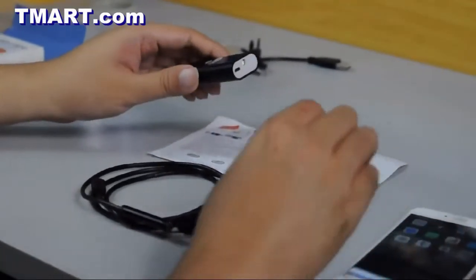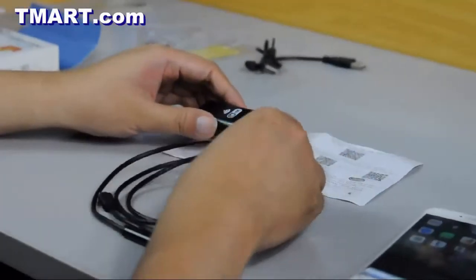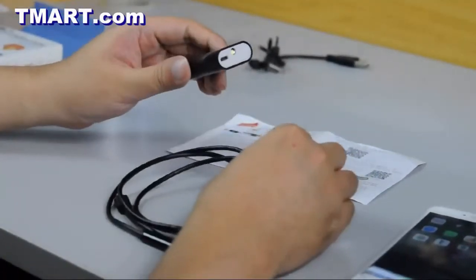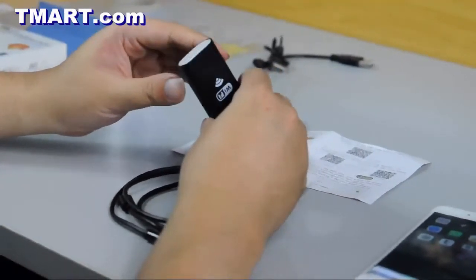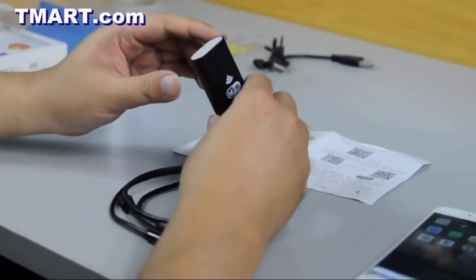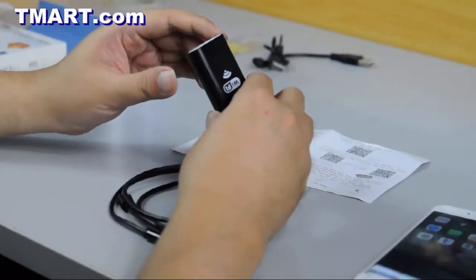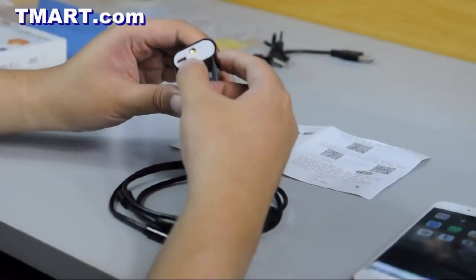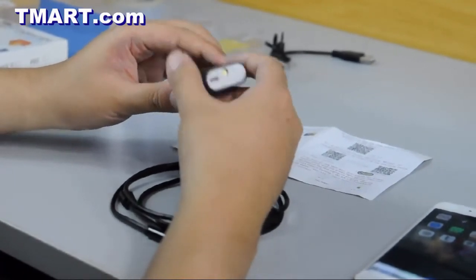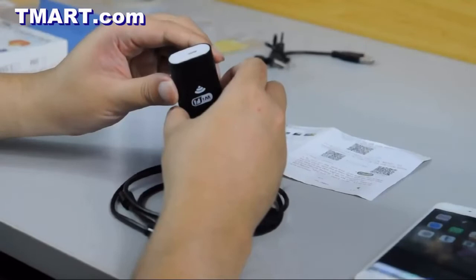Next, you want to plug the micro USB connector from the camera into the Wi-Fi box. Now there are two different micro USB ports on the Wi-Fi box. The one we want to look for is the one on the same side as the power button. The other one is used for charging the Wi-Fi box.